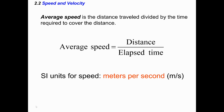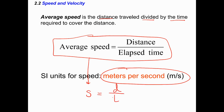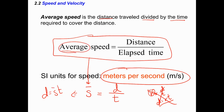Next up is speed and velocity. Average speed is defined as distance divided by time — distance traveled divided by the time it takes. The unit is meters per second. You'll see me write this equation with s for speed, d for distance, and t for time — the dust equation: distance equals speed multiplied by time. I'll put a little line over my speed to represent the average. It's not instantaneous — it's over a period of time.